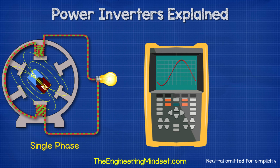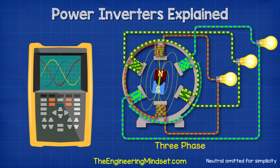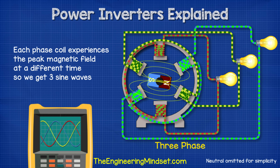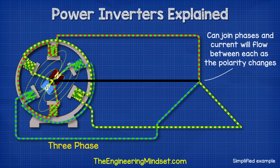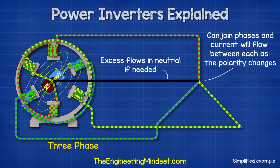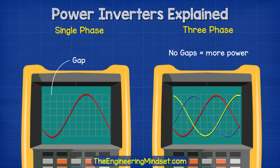With single-phase, we have a connection to just a single phase from a generator, so we have just one sine wave. But with three-phase electricity, we have a connection to each of the three phases. The phases are coils of wire inserted into the generator 120 degrees apart from the previous. This means the coils experience the peak of the rotating magnetic field at different times, giving us three phases, each with a different sine wave slightly out of sync from the previous. As the current flows forwards and backwards at different times in each phase, we can connect the phases together. Any excess will flow in the neutral back to the source if needed, but only if the load on any of the phases is unbalanced. With single-phase there are large gaps between the peaks, but with three-phase these can be combined to fill in the gaps and therefore deliver more power.